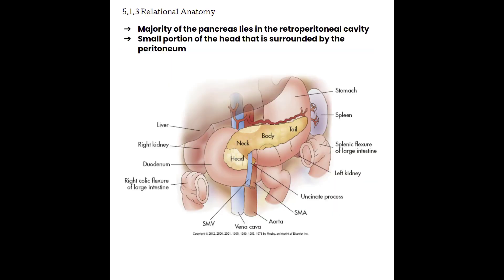It is essential for the sonographer to understand how the structures in the abdomen surround the pancreas. In general, the pancreas occupies the anterior pararenal space and lies obliquely between the C-loop of the duodenum and the splenic hilum.